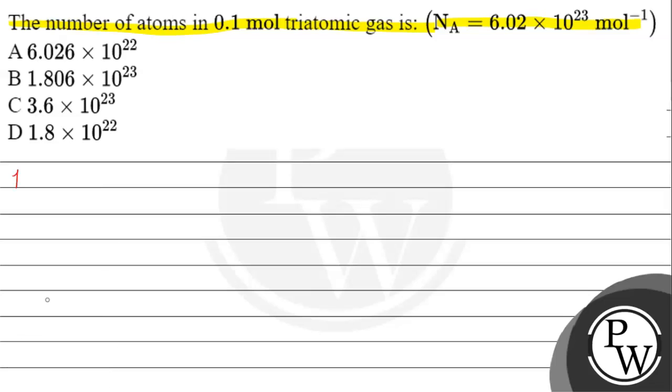The key concept for this question is Avogadro's number. Number of moles is basically equals to number of elementary entities. These elementary entities can be ions, molecules or atoms. Number of elementary entities divided by Avogadro's number equals 6.02 into 10 raised to the power 23 mole inverse.